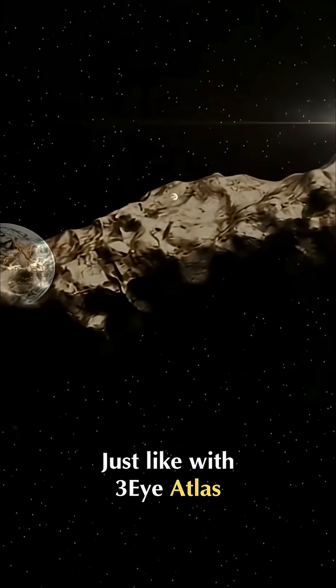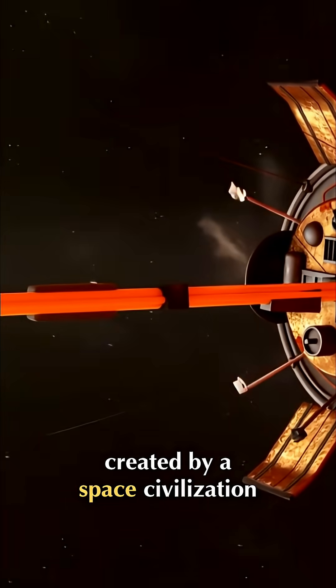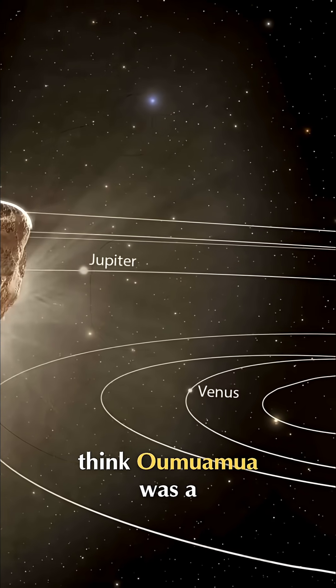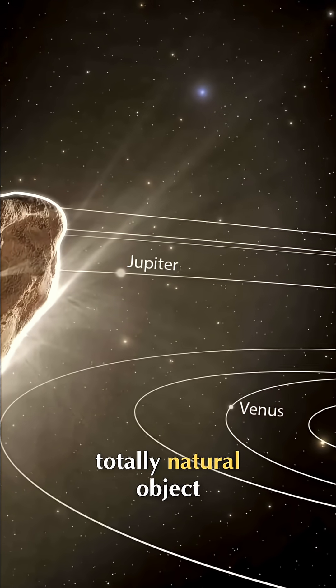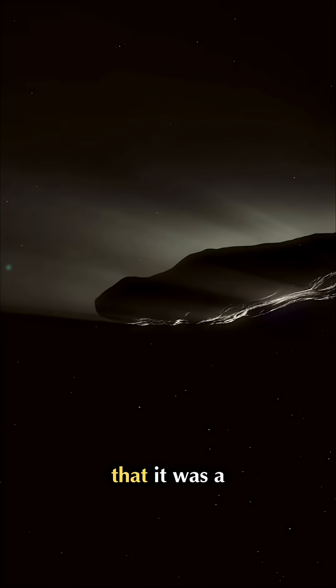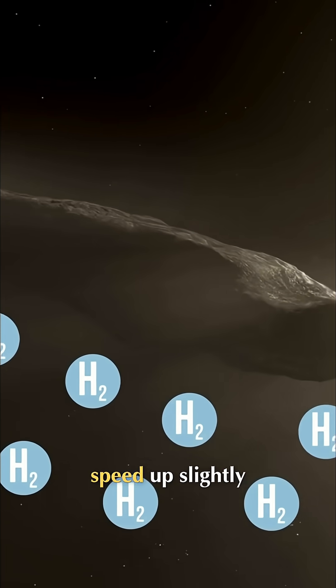Just like with Three-Eye Atlas, some people wondered if it could be technology created by a space civilization. But most scientists now think Oumuamua was a totally natural object, just a really weird one. The best guess is that it was a comet releasing invisible hydrogen gas, which caused it to speed up slightly.